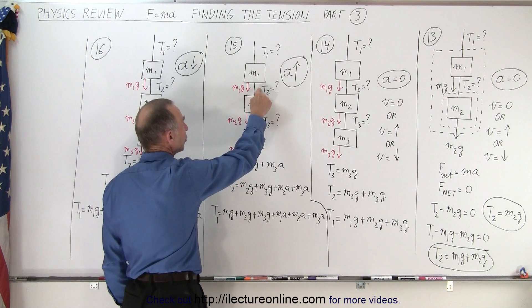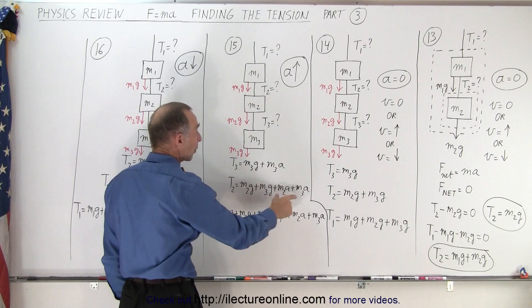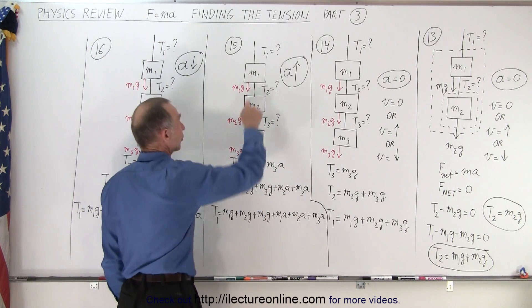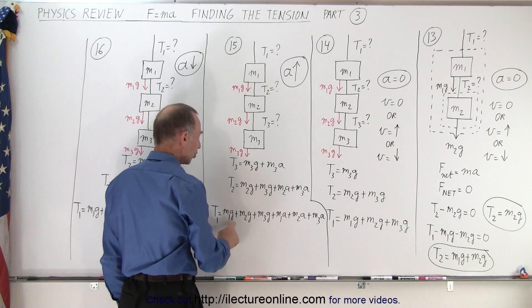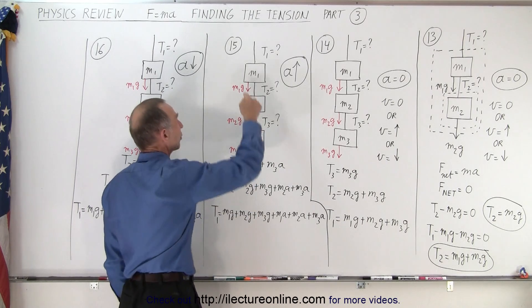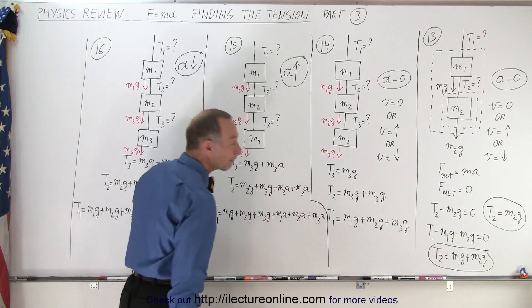To figure out T2, it will be equal to the weight of both of these objects plus the force required to accelerate both of the objects, which is M2A and M3A. And for T1, that will equal the weight of the three objects, M1G plus M2G plus M3G, plus the force required to accelerate each one of them against gravity, which is M1A plus M2A plus M3A.